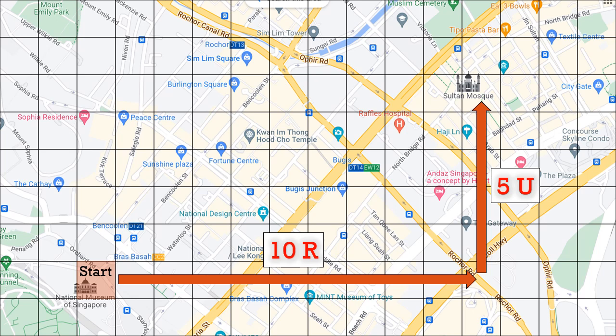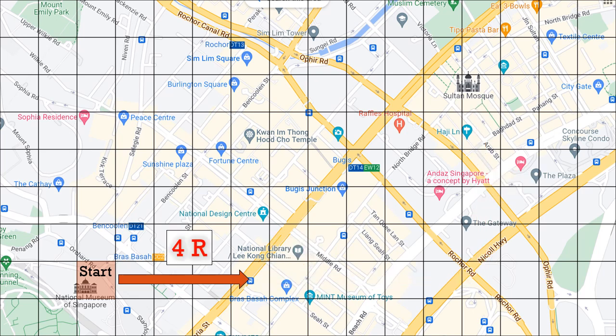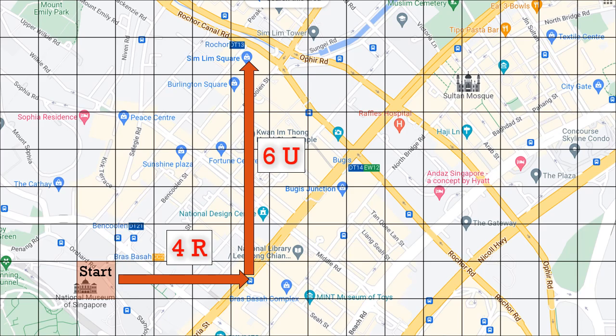Alternatively, from the museum, I could also tell you to go 4 squares right, and go 6 squares up, and then here you'll be at Simlim Square. You can go buy your computers and electronics gear there.